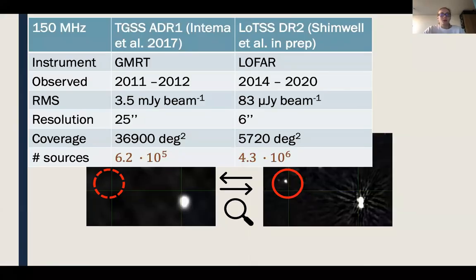In this study, we used two readily available radio surveys to find transients. We compare TGSS ADR1 and LoTSS Data Release 2, both at 150 MHz. These surveys were performed roughly a decade apart and have very different sensitivity and resolution. These differences are reflected in the source count.